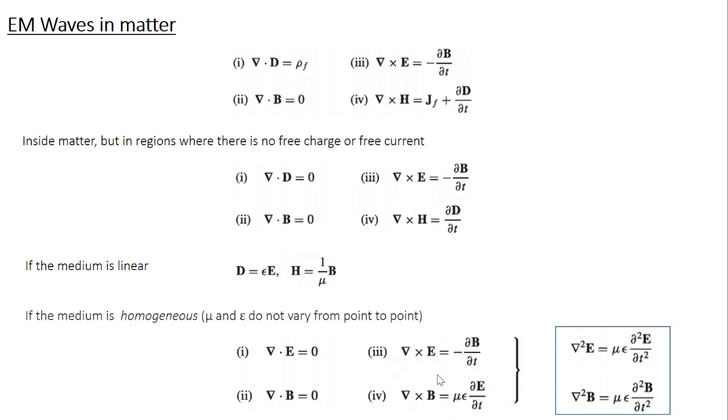So once you get this equation, now you know the drill. We have done this for the case of free space. Take the curl of third and fourth equations and expand those. So curl of third equation gives you del square E equal to mu epsilon dou square E by dou T square.